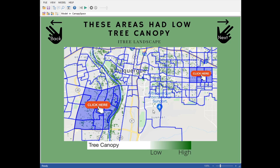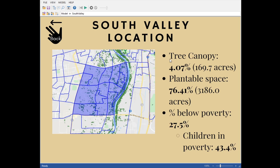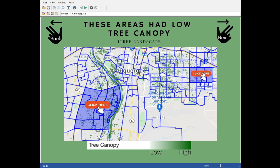Here's a different version of the same map, but you can click on each area and it shows you the factors on why we chose that area, including tree canopy, plantable space, and percent of the population below poverty. And you can do the same for the International District.